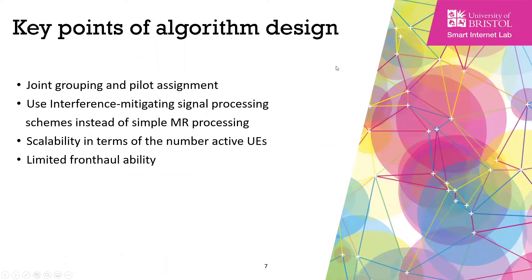At the end of my presentation, I want to summarize some key points of algorithm design in cell-free networks. Firstly, we need to do the grouping and AP selection jointly with the pilot assignment to avoid significant pilot contamination. Secondly, we need to use interference-mitigating signal processing schemes instead of the very simple maximum ratio processing scheme. Thirdly, in order to develop a user-centric cell-free system, we need to make sure the computational complexity will not scale with the number of active users, so we need to consider scalability in terms of the number of active users.